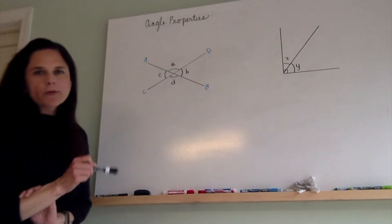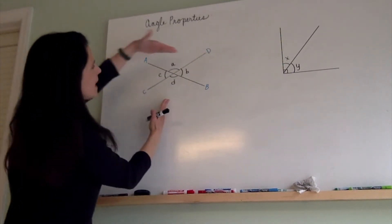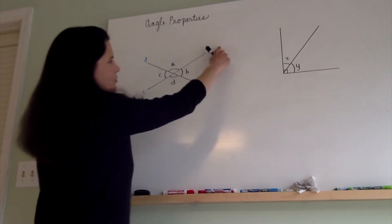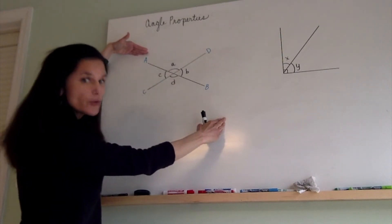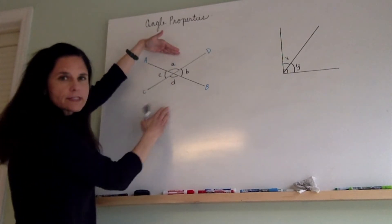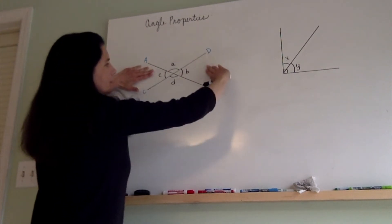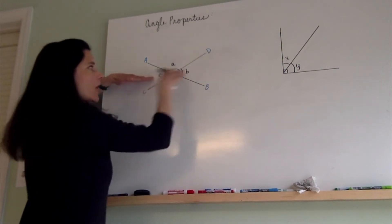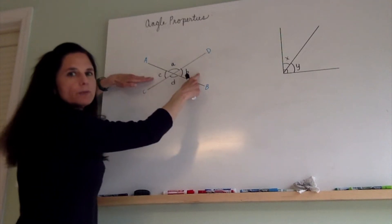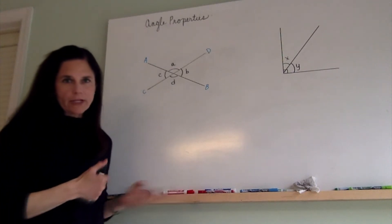The next angle property is that anytime you have two straight lines that cross, the angles that are vertically opposite from one another are equal. So if I have CD crossing with AB, then angles A and D are vertically opposite from one another, so angle A is equal to angle D. Similarly, angles C and B are vertically opposite from one another, so those angles are equal as well — whatever C measures, B would measure, and whatever D measures, A would measure. That's the third angle property.